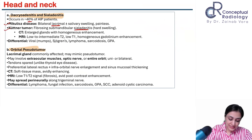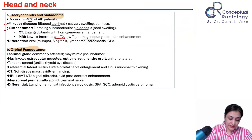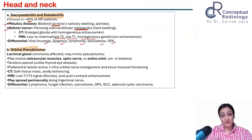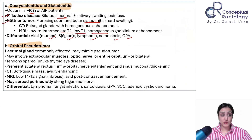Differential diagnoses for salivary gland involvement include mumps, Sjögren's, lymphoma, sarcoid, and granulomatosis with polyangiitis (Wegener's).